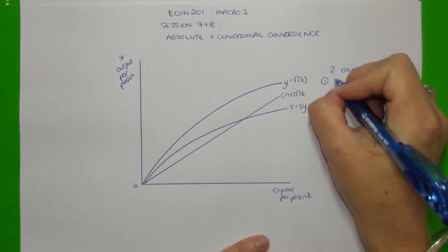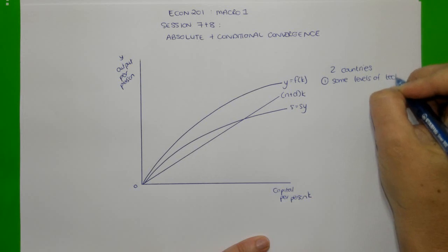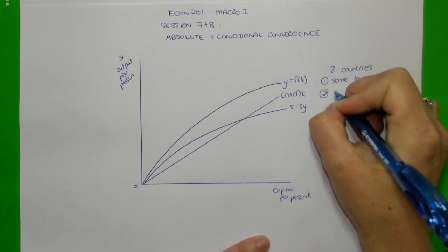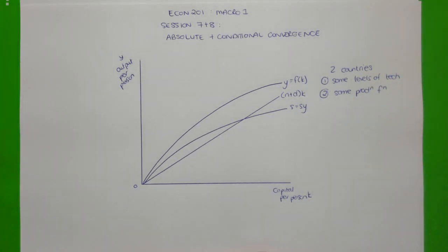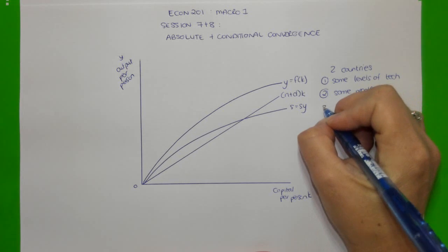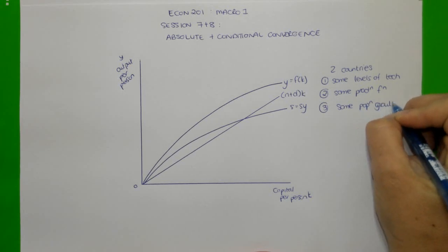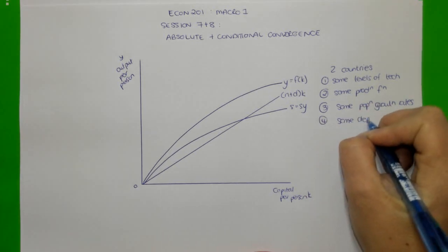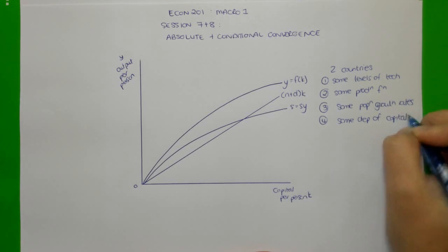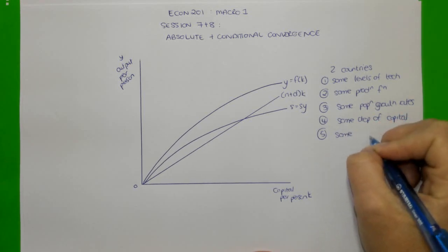The first assumption is that the two countries have the same levels or amounts of technology. The second is that they have the same production function — the relationship between capital stock per person and output per person is the same across the two countries. The third is that the countries have the same population growth rates, and the same depreciation rates of capital. And — you can see how unrealistic this is getting — the countries also have the same savings rates.